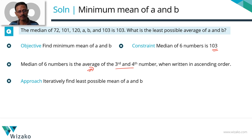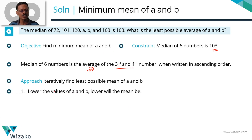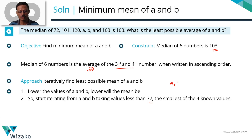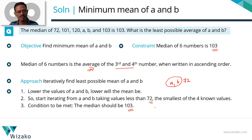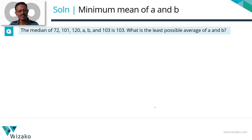We're going to approach this in an iterative fashion. Our objective is to find the minimum mean for a and b — the lower the values of a and b, the lower the mean. The smallest known value is 72, so we'll start by placing a and b to the left of 72 (less than 72) and check if the median equals 103. If not, we'll keep incrementally shifting the values to the right until the constraint is met.